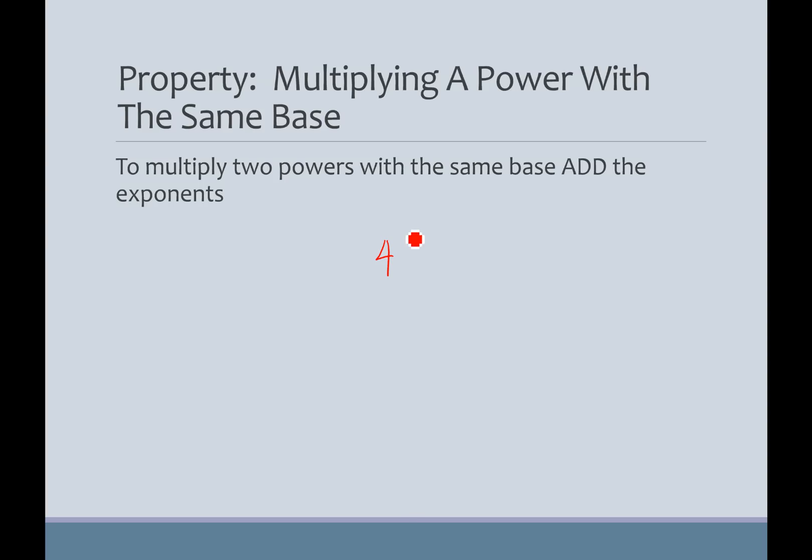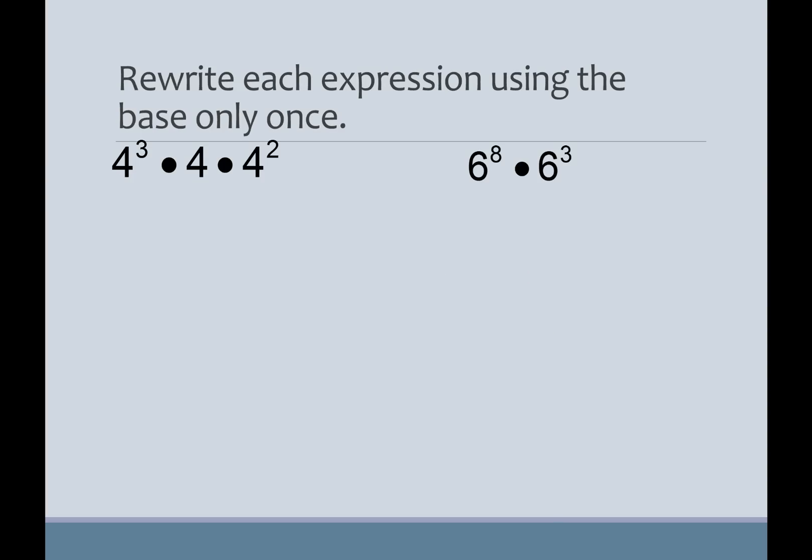Basically, it says that if I'm going to multiply a power with the same base, like what we did before, 4, that was 4 squared times 4 cubed, we add the exponents. So we keep the base the same. So, our base is 4, and we add the exponents. So, this becomes 4 to the fifth, and this is on your notes.